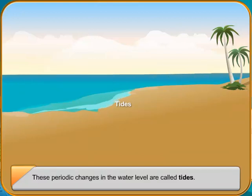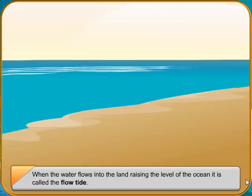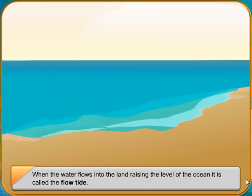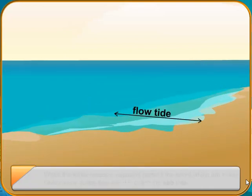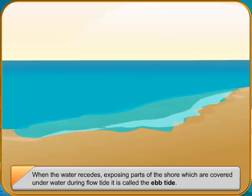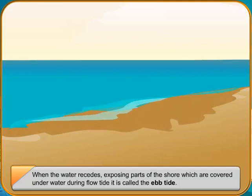Twice a day, the flow tide reaches a high point called the high tide and similarly, twice a day, the ebb tide reaches a low point called the low tide. So in a day, there is a high tide followed by a low tide about six hours later, then a high tide again after another six hours, followed by a low tide after six hours.